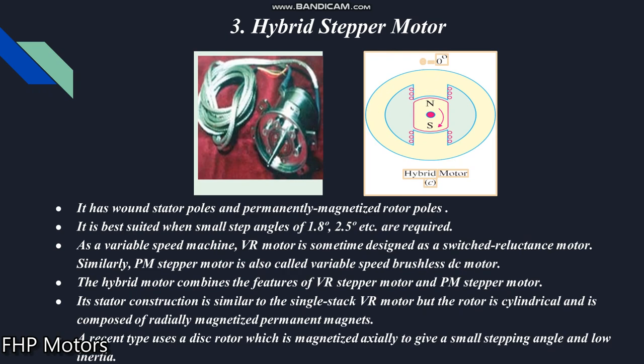The third one is the hybrid stepper motor, which combines the features of the variable reluctance and permanent magnet stepper motor. It has wound stator poles and permanently magnetized rotor poles — the stator construction is similar to the single stack variable reluctance motor, but its rotor is cylindrical and permanently magnetized, same as the permanent magnet stepper motor. The hybrid stepper motor is best suited when small step angles of 1.8 degree or 2.5 degree are required in applications.